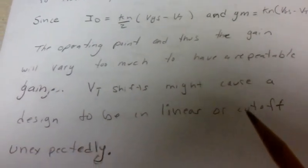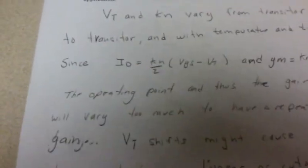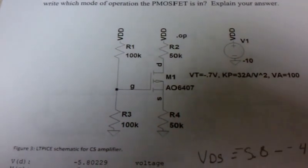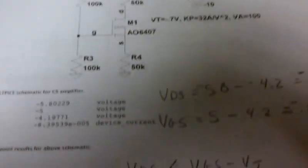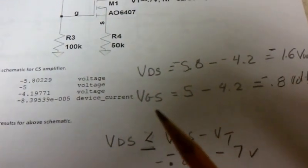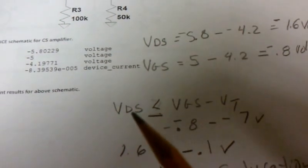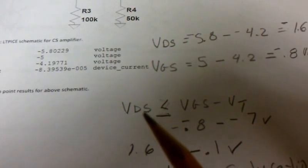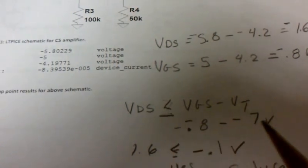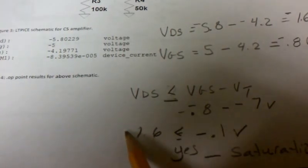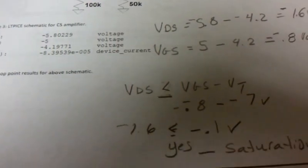Here we have a PMOS transistor and we need to determine whether it's in saturation or linear. Calculate VDS: minus 1.6 volts. VGS: minus 0.8 volts. In this case, the way we do it—if VDS is less than VGS minus VT, we should be in saturation. And it is, so it's in saturation.